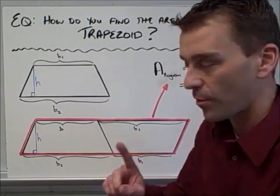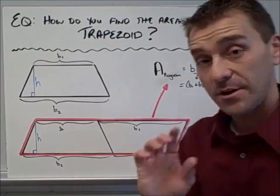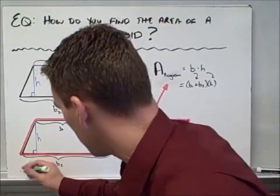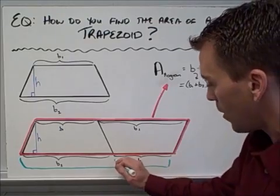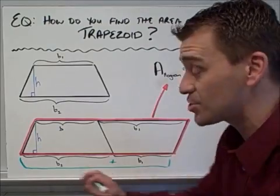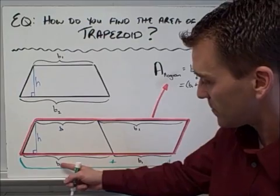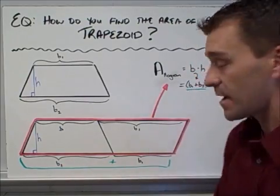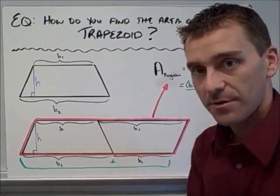We know how to find the area of a parallelogram — the formula is base times height. Looking at this combined shape, the whole base of the parallelogram is B1 plus B2, and the height is the same h. So the area of this parallelogram is (B1 + B2) times h, substituting those values right in.